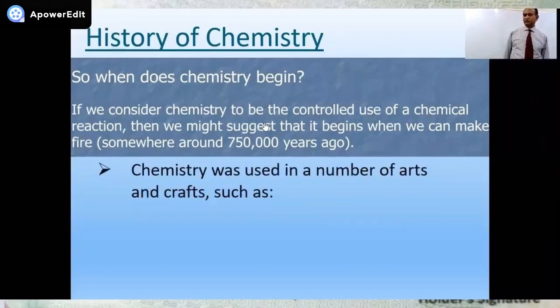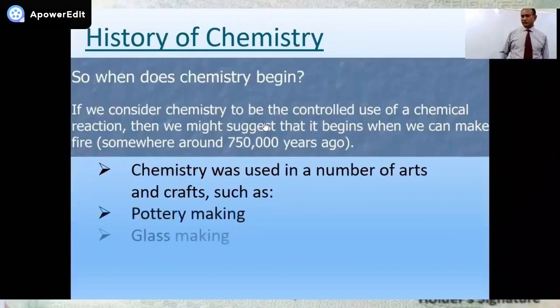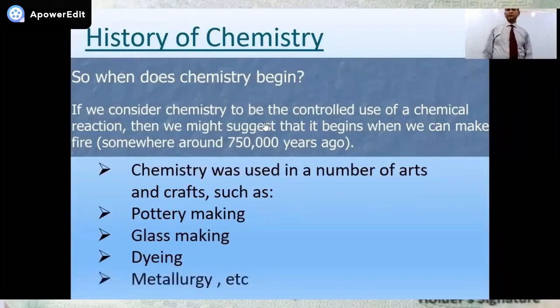Since then chemistry was used in a number of arts and crafts, directly or indirectly, like making pots, clay pots or making weapons or any other thing like this. As you can see on the screen, pottery making, glass making, dyeing. All of these are the processes which were invented by human beings long, long time ago. What is next? Metallurgy.